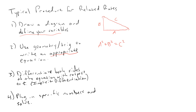Step three: differentiate both sides with respect to t. Treat this as implicit differentiation — it's essentially the chain rule. For a² + b² = c², differentiating with respect to t gives 2a · da/dt plus 2b · db/dt equals 2c · dc/dt.